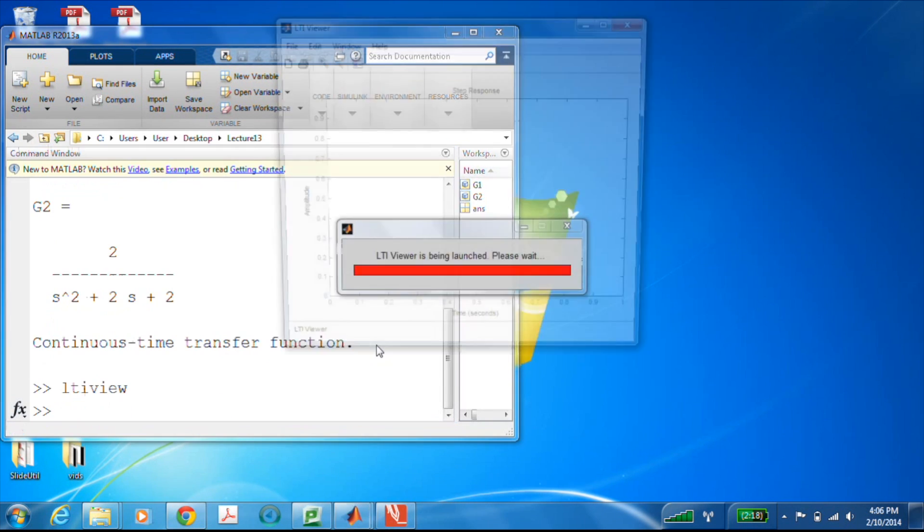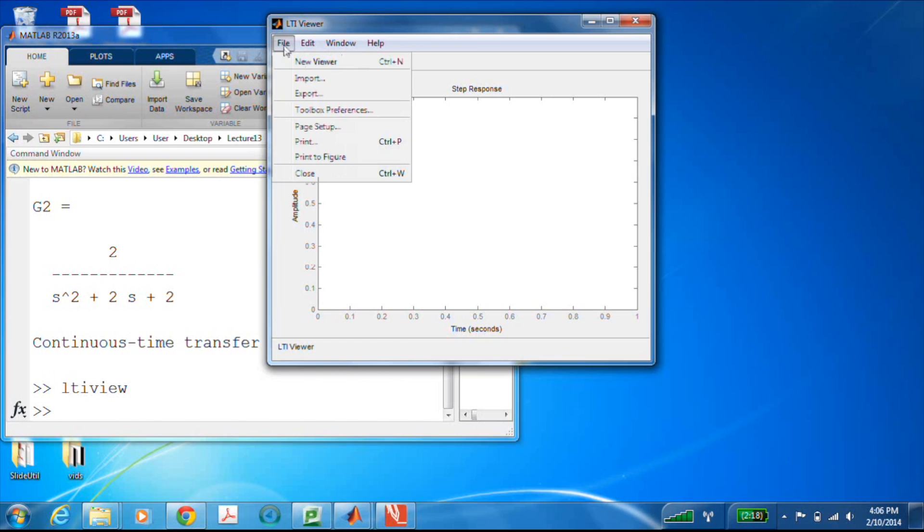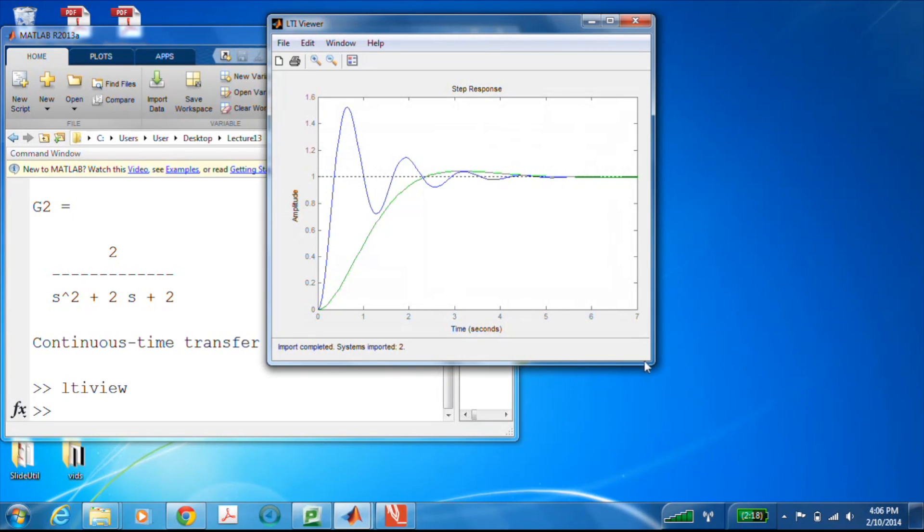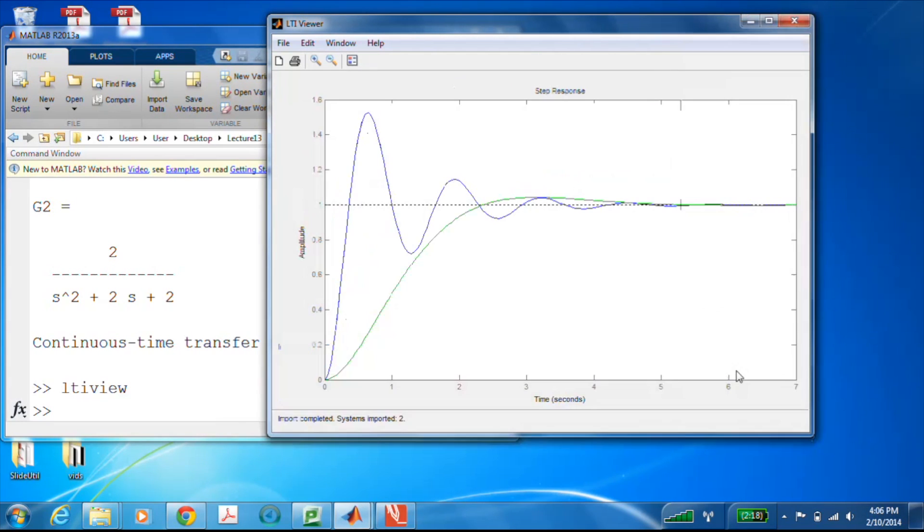Let's fire up LTI view. We have a blank palette. We can easily import our two transfer functions. Shift click from the workspace, and there they are. The blue is g1 that had the damping ratio of 0.2 and the green is the g2 that had the higher damping ratio of 0.7.